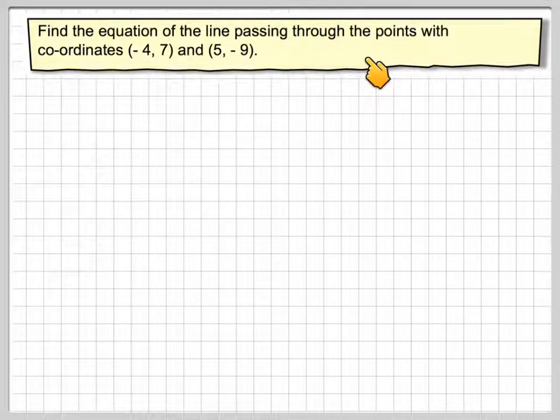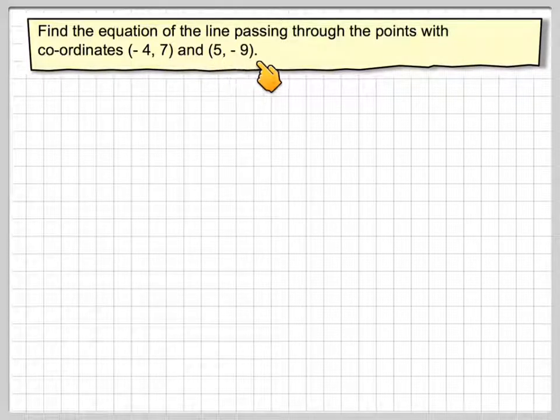Find the equation of the line passing through the points with coordinates (-4, 7) and (5, -9).